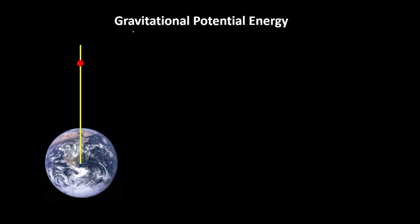Now let us first find the expression for gravitational potential energy. Imagine that I have a mass m, and the mass of Earth is capital M, such that the small m mass is at a distance x from the center of the Earth.